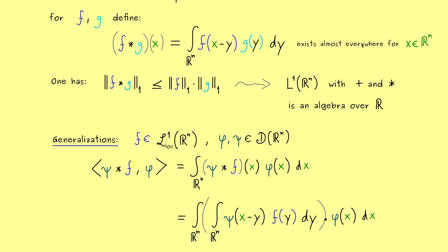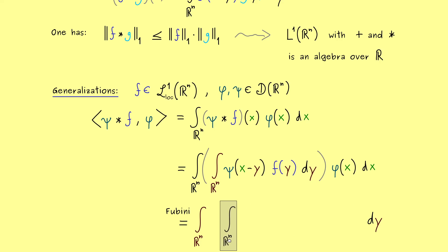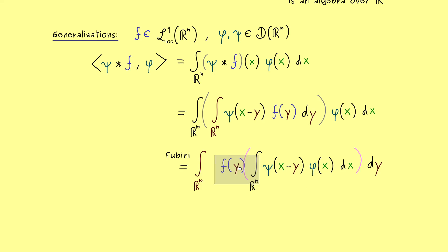We then multiply on the right by phi of x. Since phi also has compact support, we can apply Fubini's theorem here — we can simply change the order of the two integrations. We put the integration with respect to y to the outside and first do the integration with respect to x. Now inside the first integral we have f of y, which does not depend on x, so we can pull it out as a constant. And then we immediately see what we have: a convolution with two test functions. The only thing to change is the order of the variables x and y — so what we actually want is y minus x.